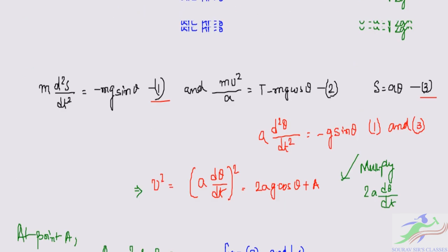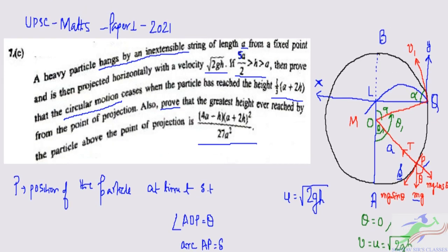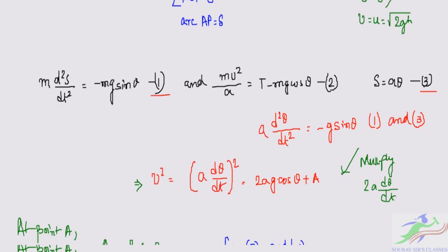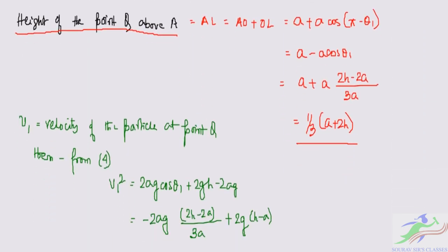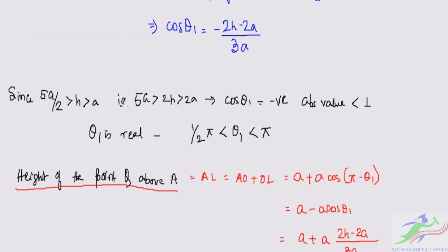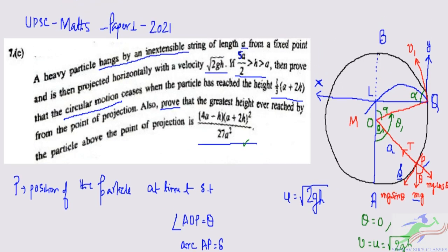So that is a pretty lengthy sum — this question is worth 20 points. We have proved that the circular motion ceases at height (1/3)(A + 2H) above the point of projection, and the greatest height above the projection point is (1/27A²)(A + 2H)²(4A − H). Hence question 7C has been solved. In the next video we will look at question 8 of section B. See you in the next video.